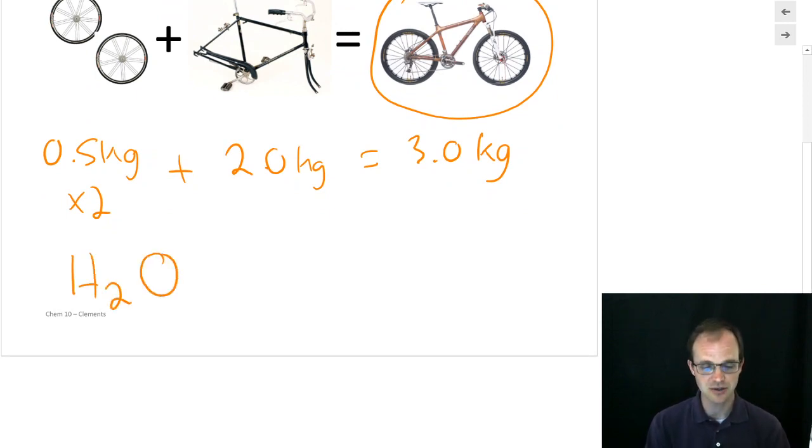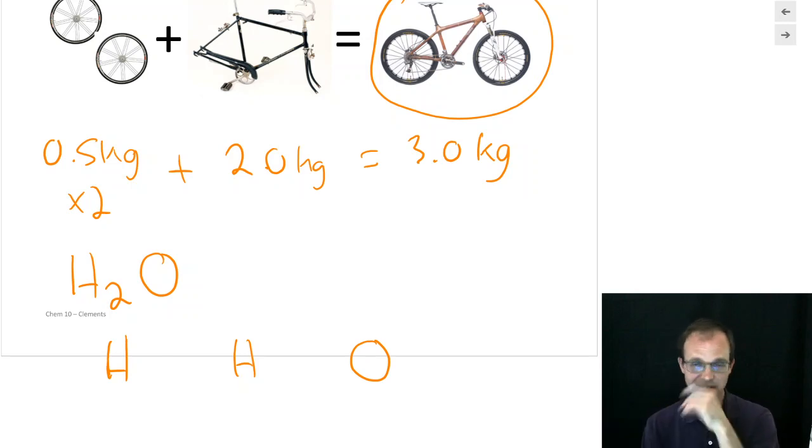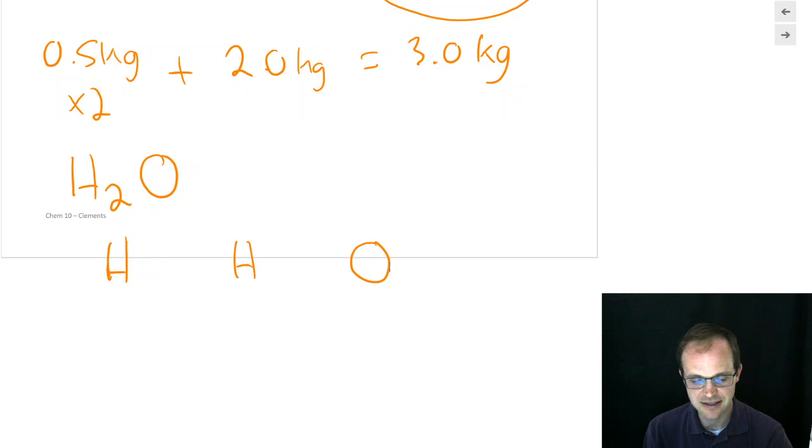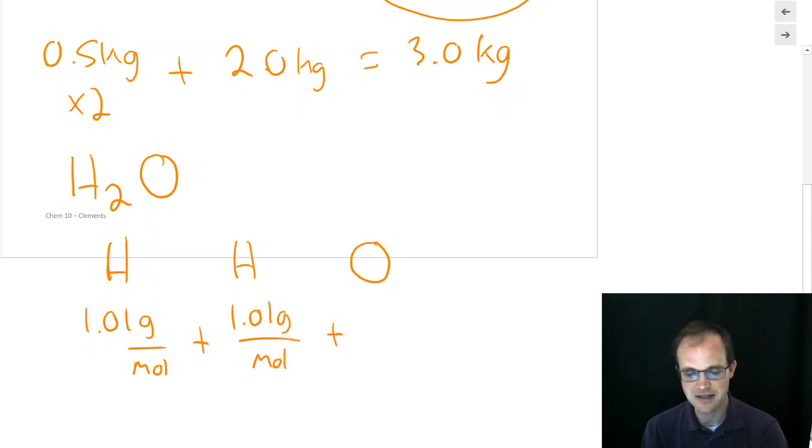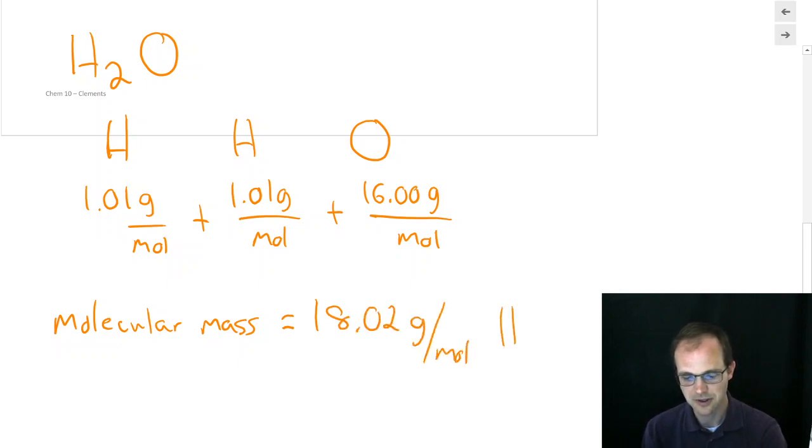But what's water? Water specifically is H2O. What does that mean? There's two hydrogens and an oxygen. And just like we did above, when we just added up the masses of each part of the bicycle to find the mass of the bicycle, we do the same thing for molecules. We're going to add the atomic mass of hydrogen, which is 1.01 grams per mole, the atomic mass of the second hydrogen, which is 1.01 grams per mole, and the atomic mass of the oxygen, which is 16.00 grams per mole, to find out the molecular mass.